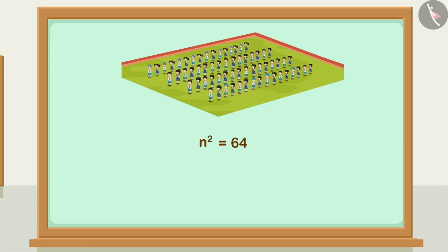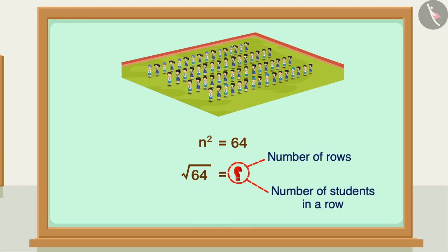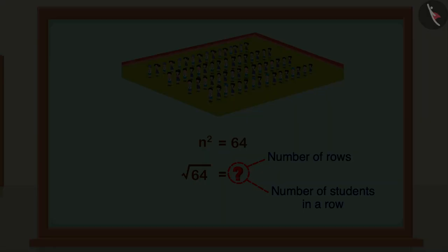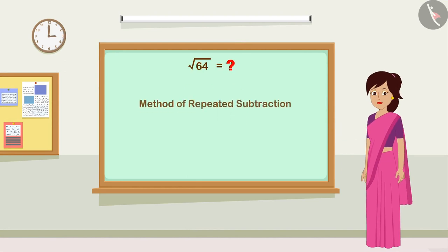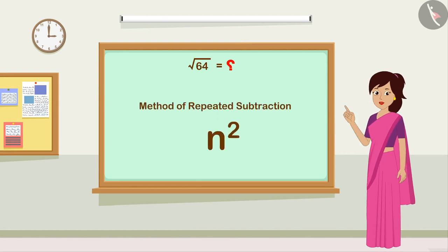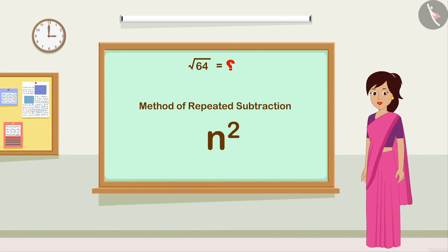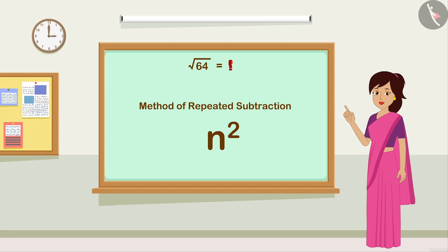Now we will go back to our first question. Here we have to find the value of n whose square is equal to 64 — that is, we need to find the square root of 64. We can find the square root by several methods, but in this video we will use the method of repeated subtraction.